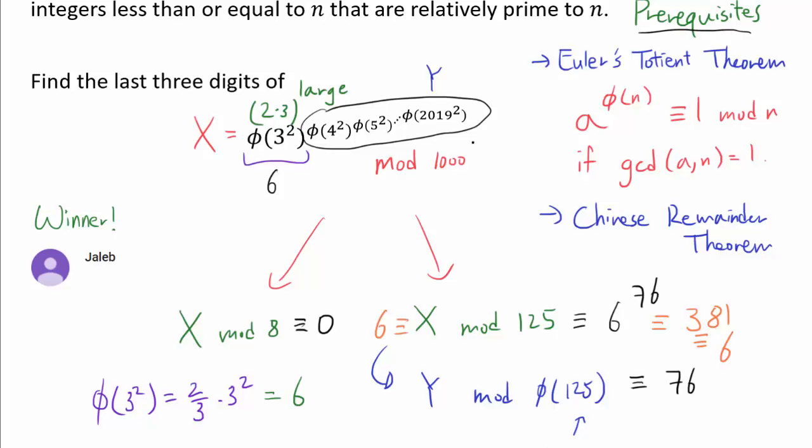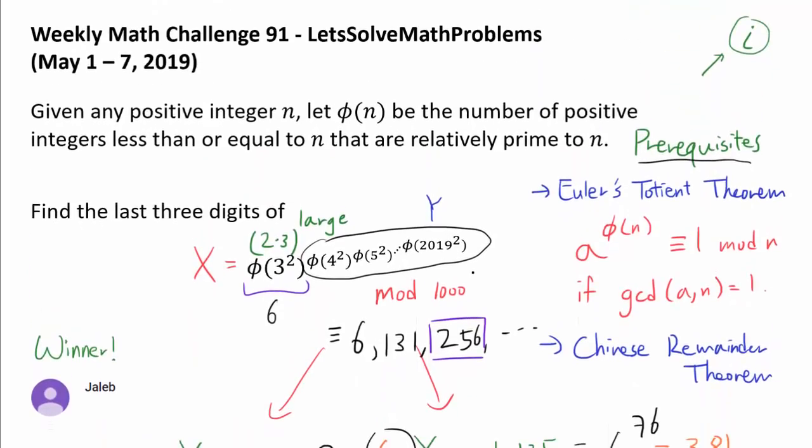So now we apply the Chinese remainder theorem for the final time. We know X mod 1000 is either going to be 6 or add 125, 131, add another 125, 256, etc. But 256 is already divisible by 8. It's 0 mod 8. So we know X is 256 mod 1000. So our final answer is 256. 256.